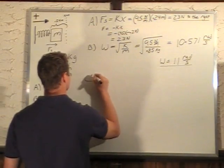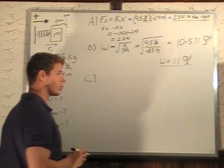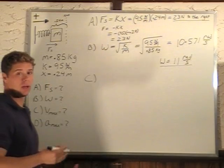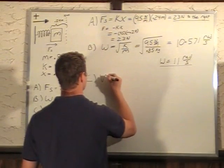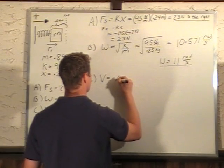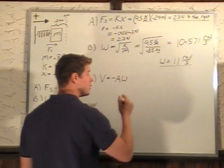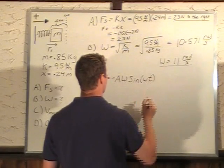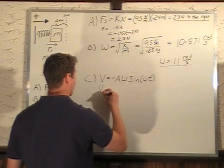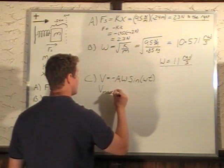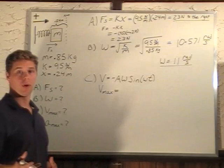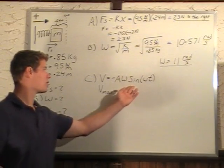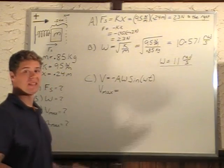And C is our max velocity. So we actually have a formula for velocity of an oscillating system. V equals negative A omega sine omega t. Now we're looking for the maximum. Sine just oscillates between negative 1 and 1.